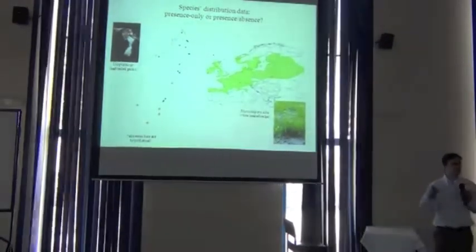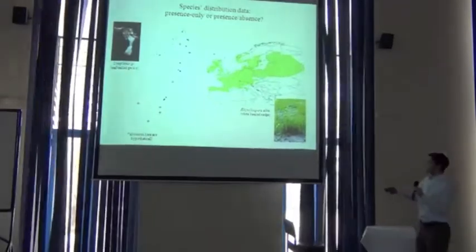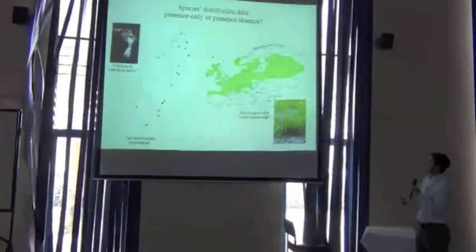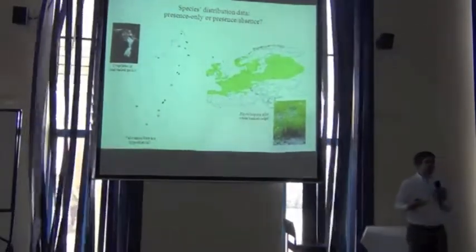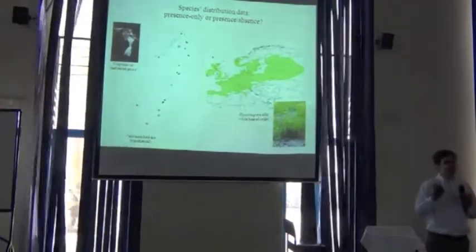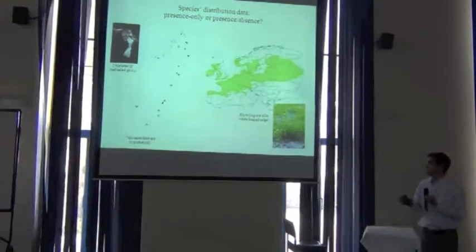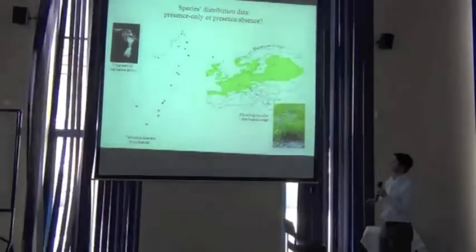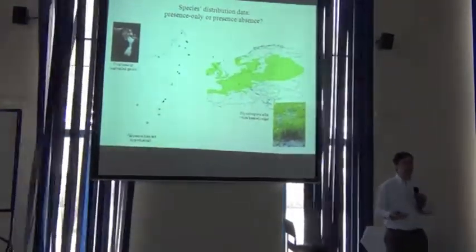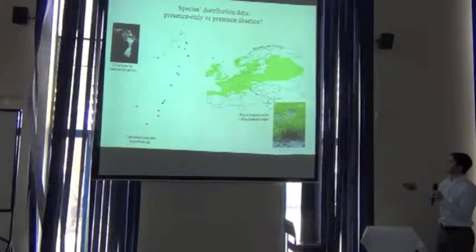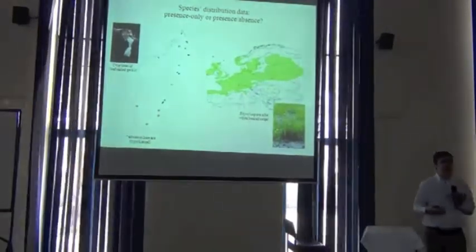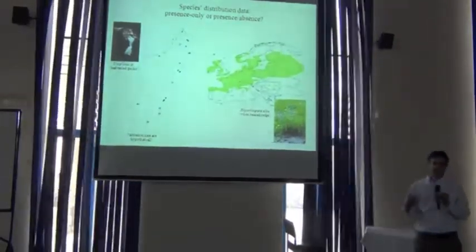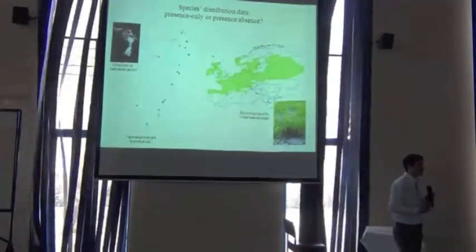But what we can do is use the lack of presences as absences. So occasionally you'll see this in the work and in some cases it can be well justified. We don't have presences here, so we can be fairly certain in these very well sampled landscapes at coarse resolution that the species is actually absent there. So when you come to choosing algorithms, you can potentially be using algorithms that use presence and absences. A lot of my thesis work used presence and absence models. It's not that straightforward as just presence and absence data.